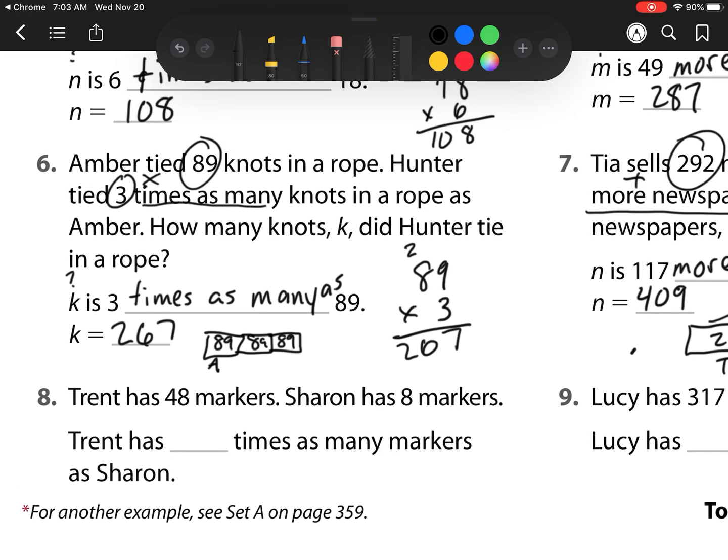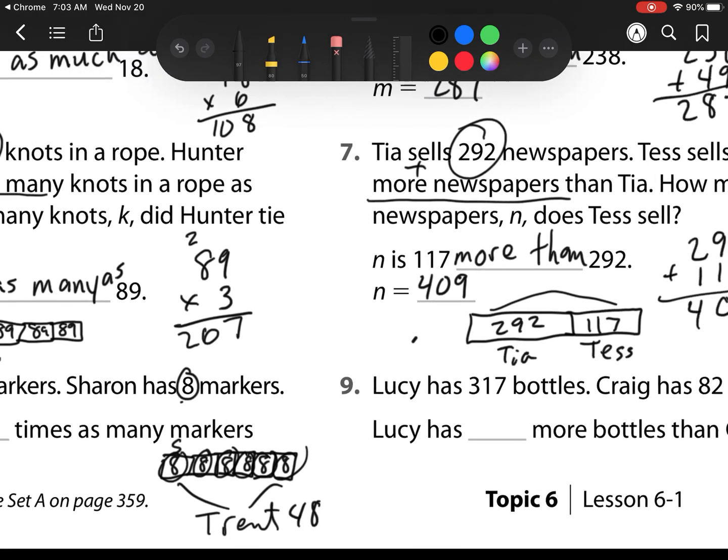A model for number 6 would look like this. Amber's tied 89. And then it says that Hunter's tied 3 times as many, so that would be 3 boxes. So those are what my models look like for this. Number 8 is a little bit different now. So let's check. Trent has 48 markers. Shannon has 8. Trent has blank times as many markers as Shannon. Well, what we have here is Shannon has my less amount of markers, so she has 8. And I need to keep making boxes until we get to 48, because that's how many Trent has. So that would be 6 boxes. So those 6 boxes would be Trent's, which is 48. So how many times? Well, that is 1, 2, 3, 4, 5, 6 groups. So Trent has 6 times as many markers as Shannon.